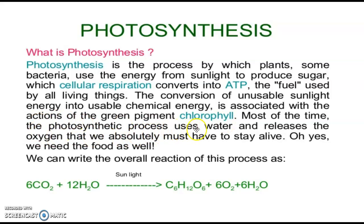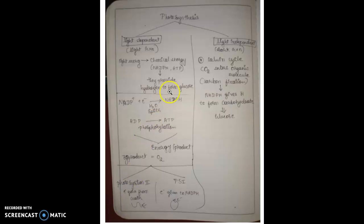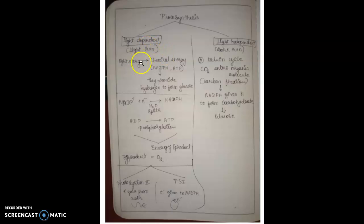Most of the time the photosynthetic process uses water and releases oxygen that we must have to stay alive — we use oxygen for breathing. Photosynthesis has two stages: the light-dependent reaction, also called the light reaction, and the light-independent reaction, also called the dark reaction. In the light reaction, light energy or solar energy is converted into chemical energy in the presence of chlorophyll.